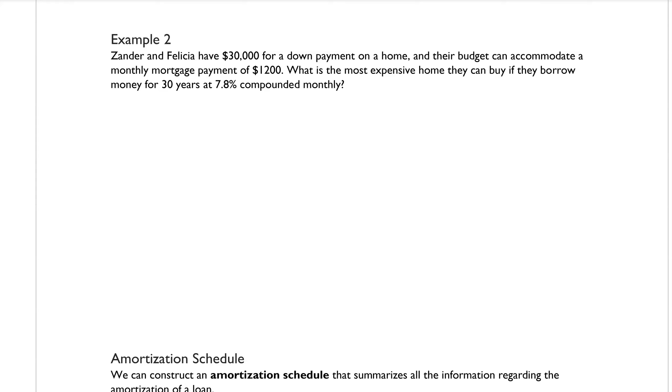Example two says, Xander and Felicia have $30,000 for a down payment on a home, and their budget can accommodate a monthly mortgage payment of $1,200. What is the most expensive home they can buy if they borrow money for 30 years at 7.8% compounded monthly?